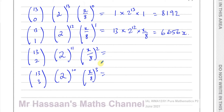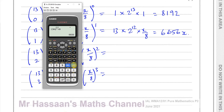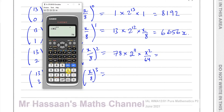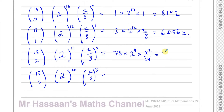So that will be 6,656x. Then for the x² term, I use the calculator button: 13C2 gives me 78. So you have 78 times 2 to the power of 11, times x² over 8² (which is 64). That gives me 78 times 2 to the power of 11, divided by 64, which is 2,496x².